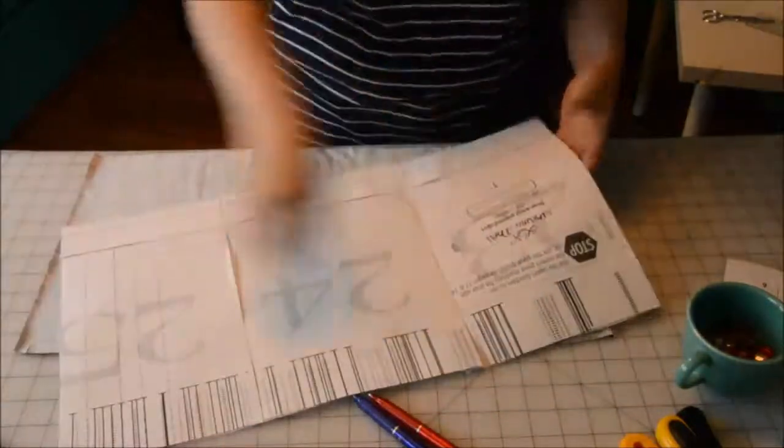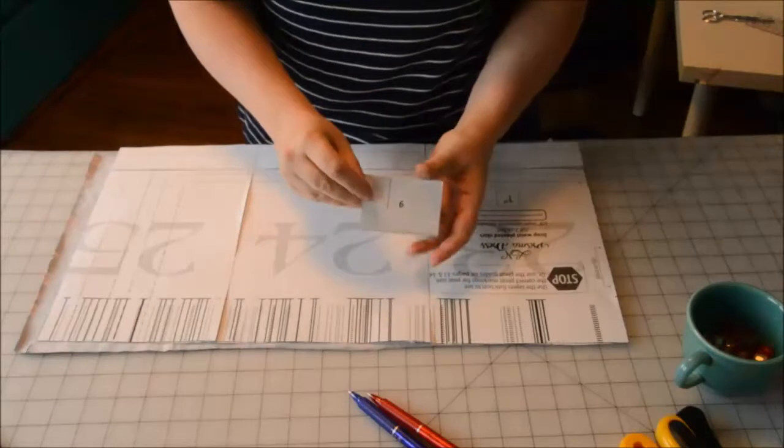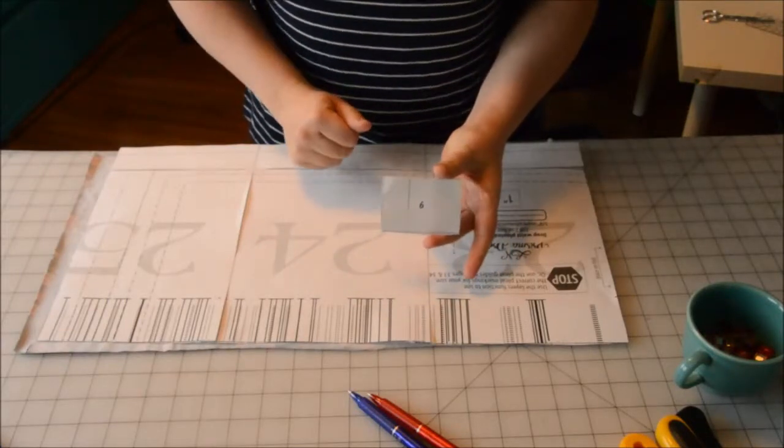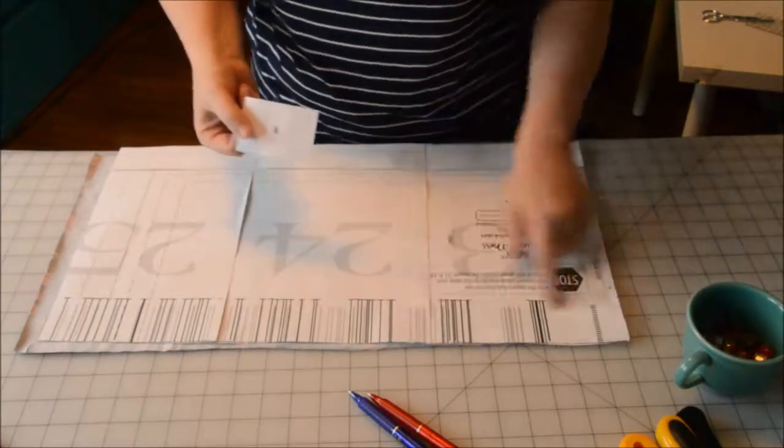In that case, the last two pages of the pattern have pleat guides for each size that look like this. So you'll cut out your size pleat guide, and you'll use this instead of the markings on the top of the paper.